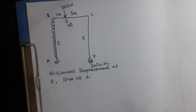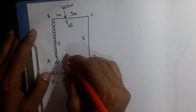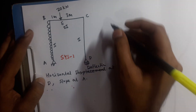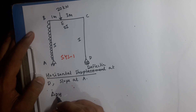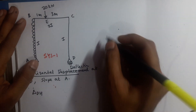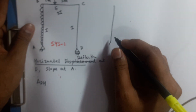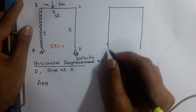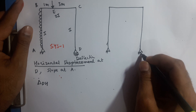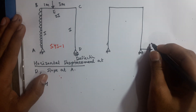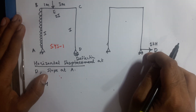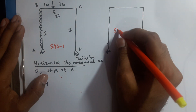We have to draw two systems. I will call the original loaded structure System 1. For the horizontal deflection at D — delta_D_horizontal — we draw System 2: the same structure but with no real loads, only a unit load applied at point D in the direction of the required deflection.